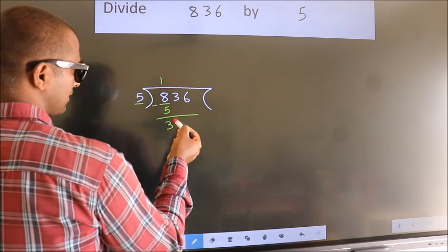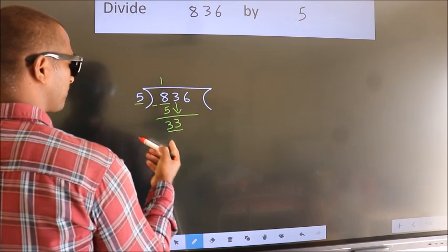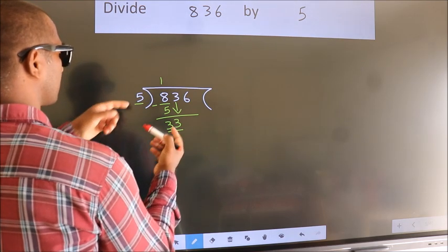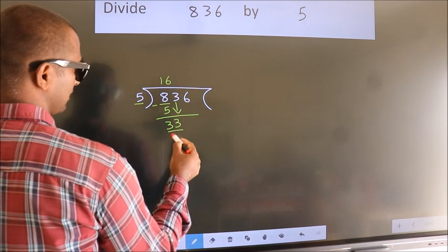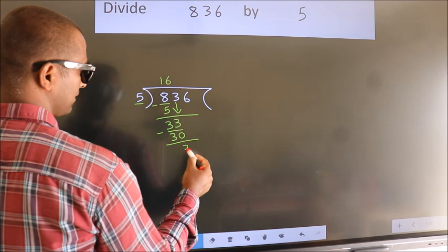After this, bring down the beside number. So 3 down. So 33. A number close to 33 in the 5 table is 5 times 6, 30. Now we subtract. We get 3.